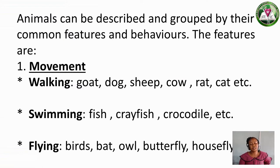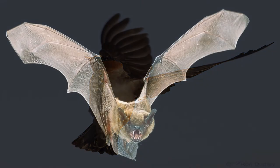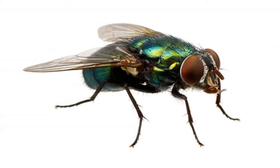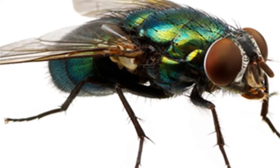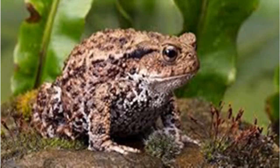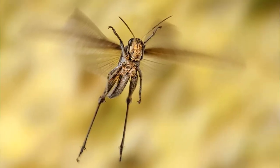The third movement type is Flying. Now we are going to know animals that move by flying. We have birds, bat, owl, butterfly, housefly, and so on. We also have another one: Hopping. The ones that move by hopping include toad, frog, and grasshopper.